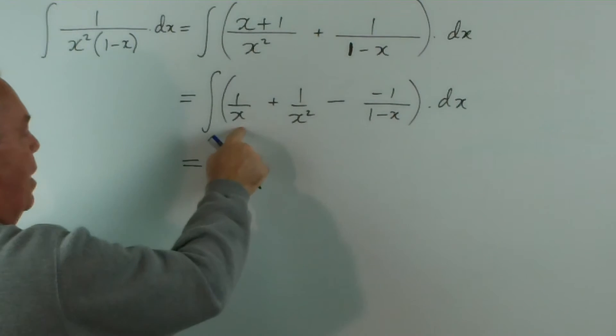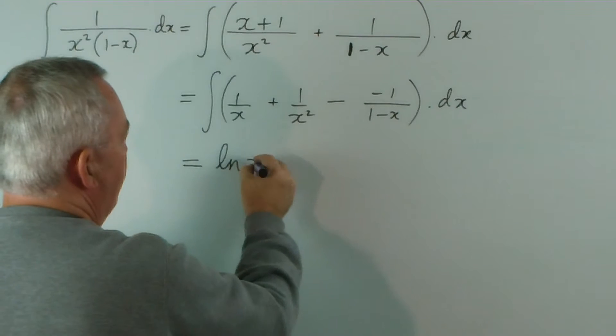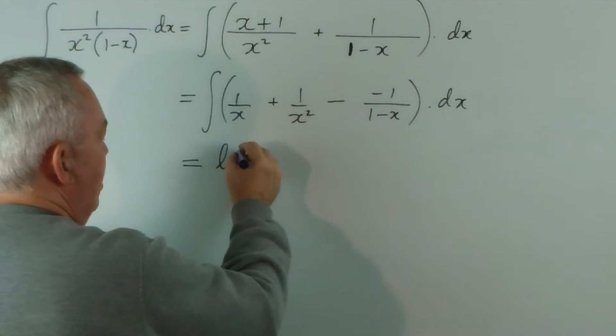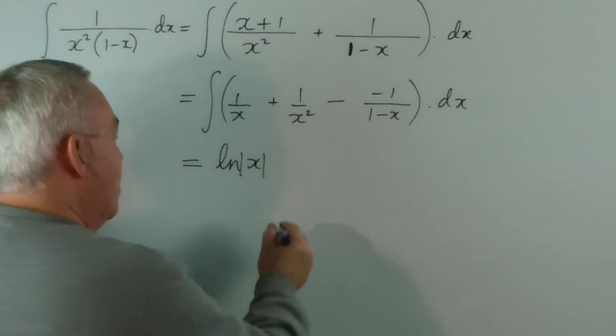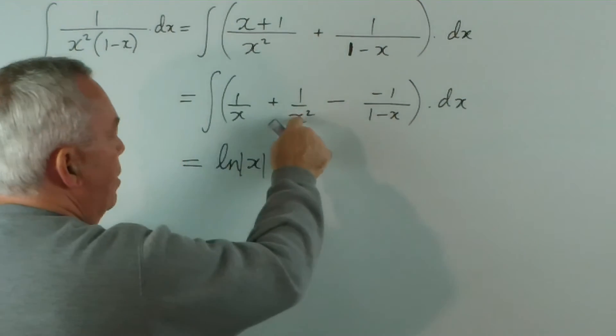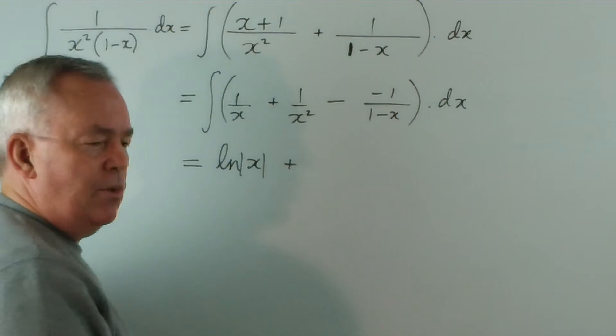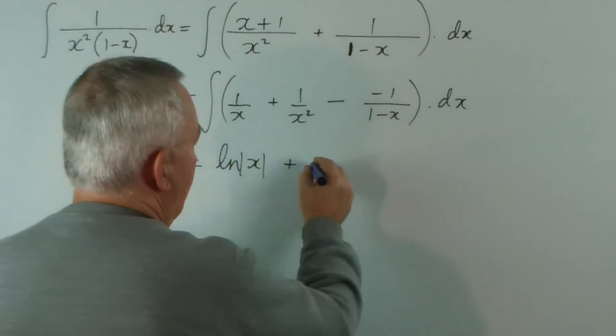So, what's the integral of 1 over x? It's log, strictly speaking, log modulus x. What is the integral of 1 over x squared, which is x to the negative 2? Well, it's x to the negative 1 over negative 1.